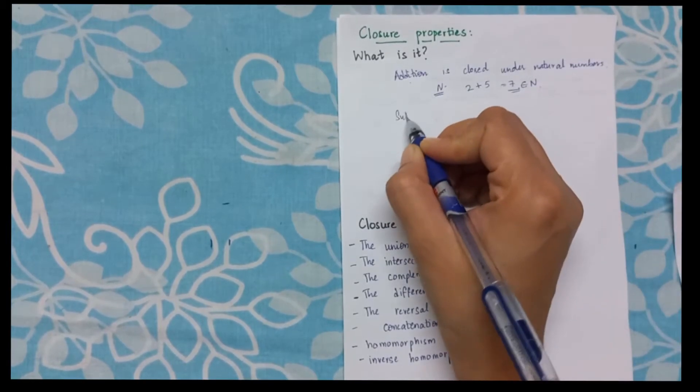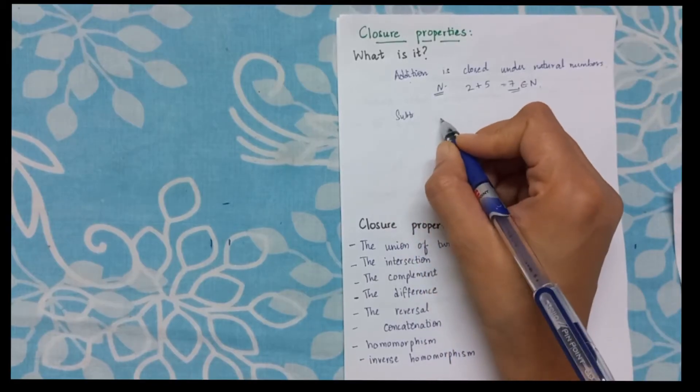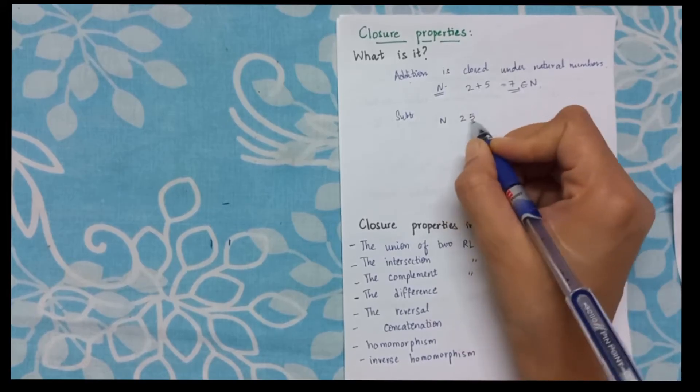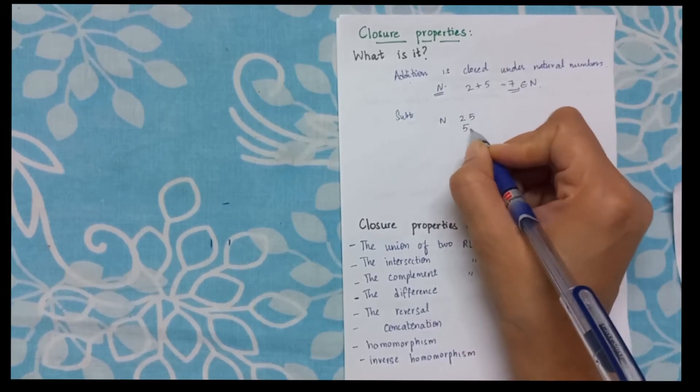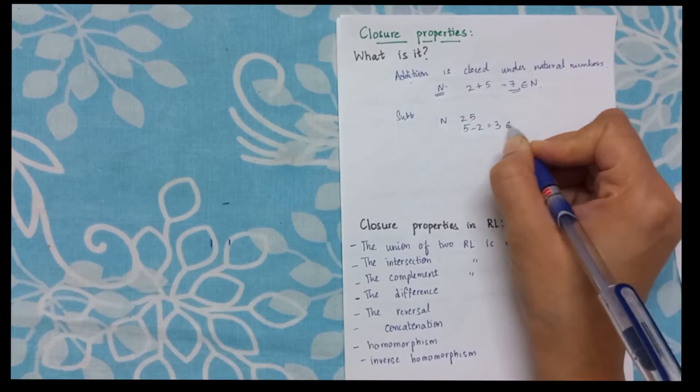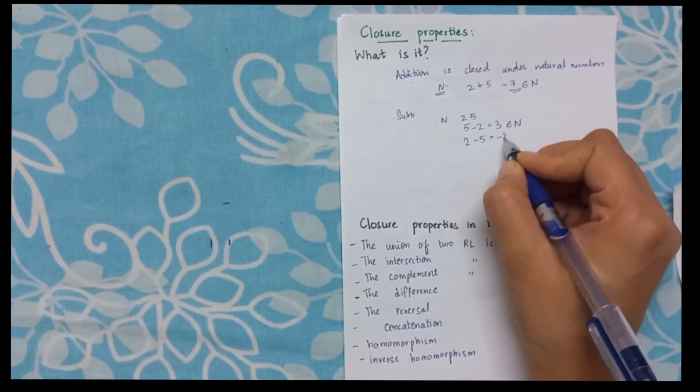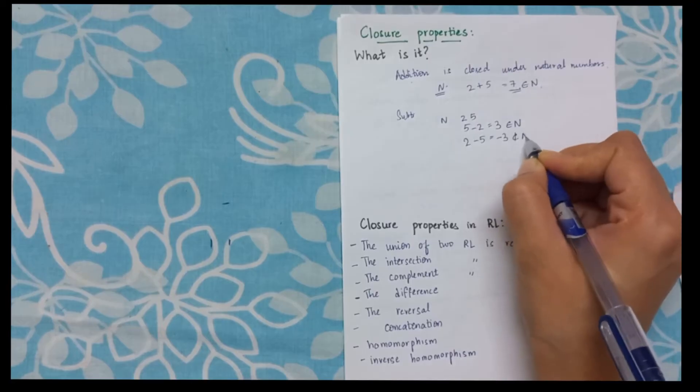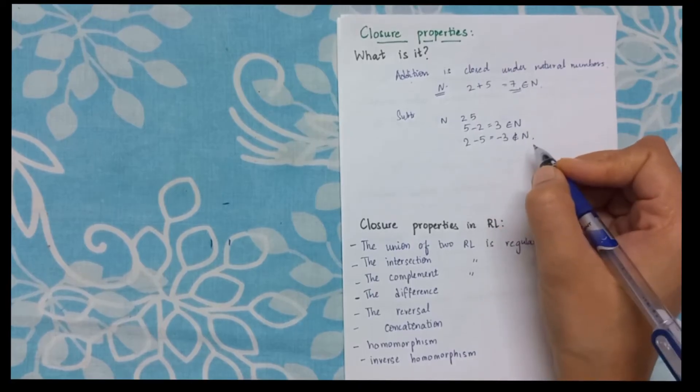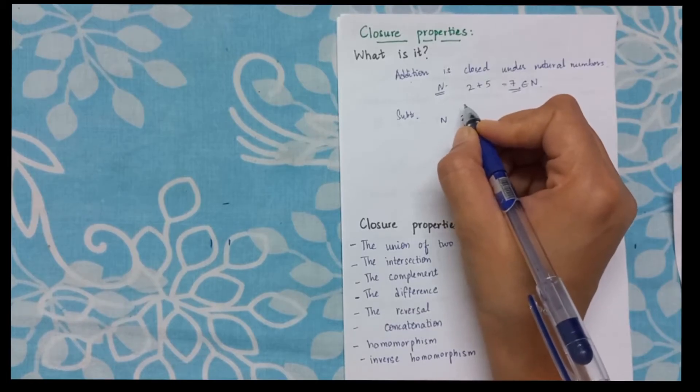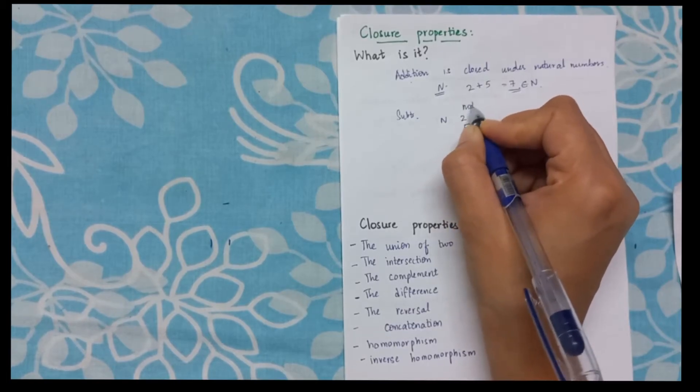Now what happens with subtraction? If I take 2 numbers from natural numbers, let's take 2 and 5. 5 minus 2 will give me 3 which is of course belonging to N. But 2 minus 5 is giving me minus 3 which does not belong to the set of natural numbers. So the subtraction is not closed under natural numbers.